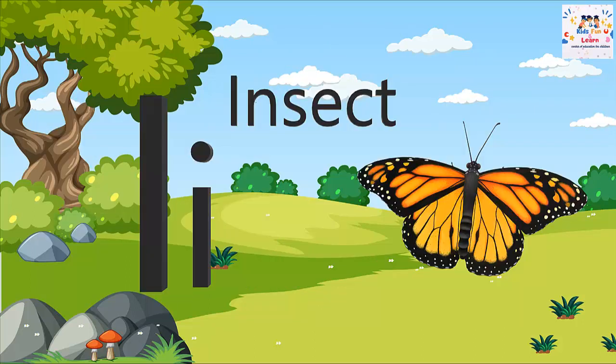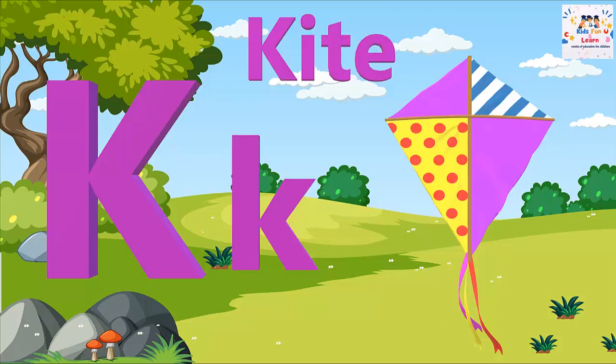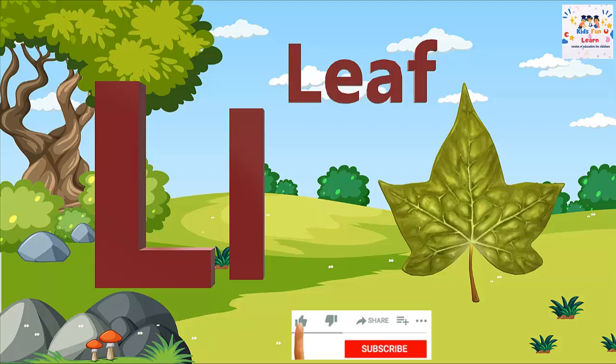I. I for insect. J. J for juice. K. K for kite. L. L for leaf.